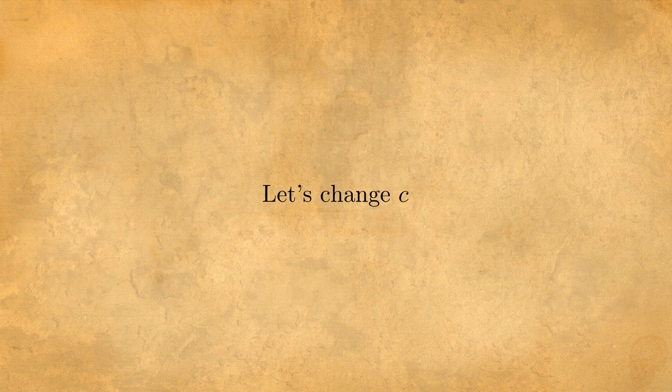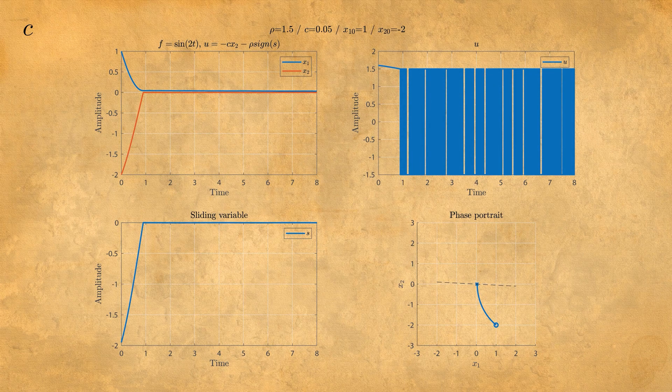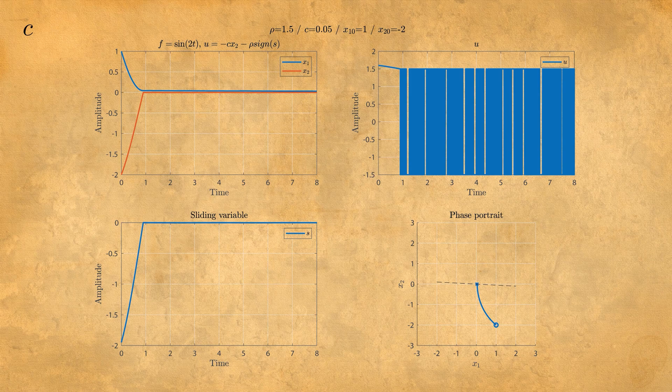Now let's change C and watch how it influences the system. When C is very small, we still reach stability but not zero exactly, as you can see on X1 and X2.